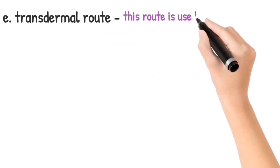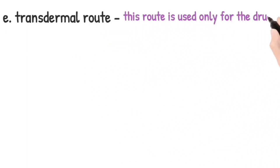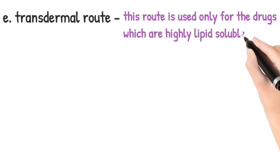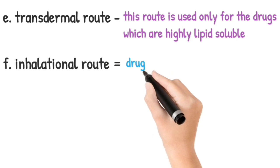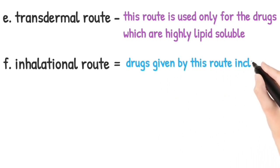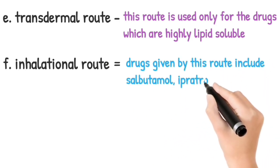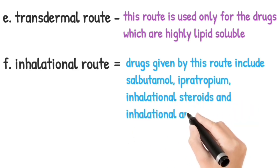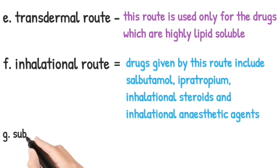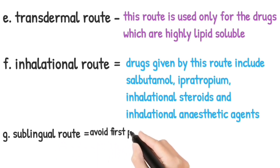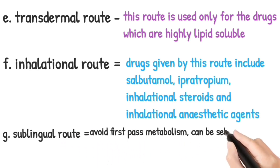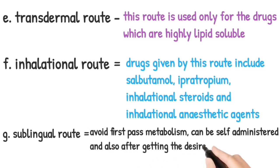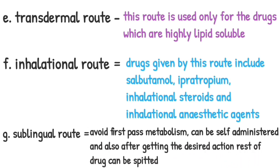Transdermal route: this route is used only for drugs which are highly lipid soluble. Inhalational route: drugs given by this route include salbutamol, ipratropium, inhalational steroids, and inhalational anaesthetic agents. Sublingual route: avoids first-pass metabolism, some can be self-administered, and after getting the desired action, the rest of the drug can be spat out.